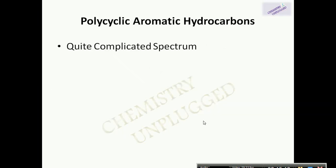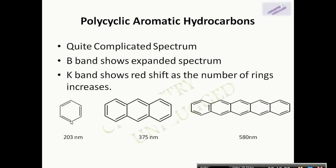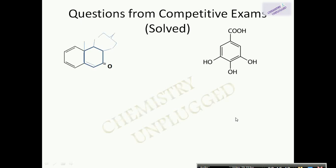In polycyclic aromatic hydrocarbons, the spectrum is quite complicated. On adding an additional benzene ring, the B band shows an expanded spectrum. As the size of polycyclic aromatic hydrocarbon increases, the K band shows a redshift. For example, benzene has lambda max at 203nm, anthracene at 375nm, and pentacene at 580nm — which is in the visible range.